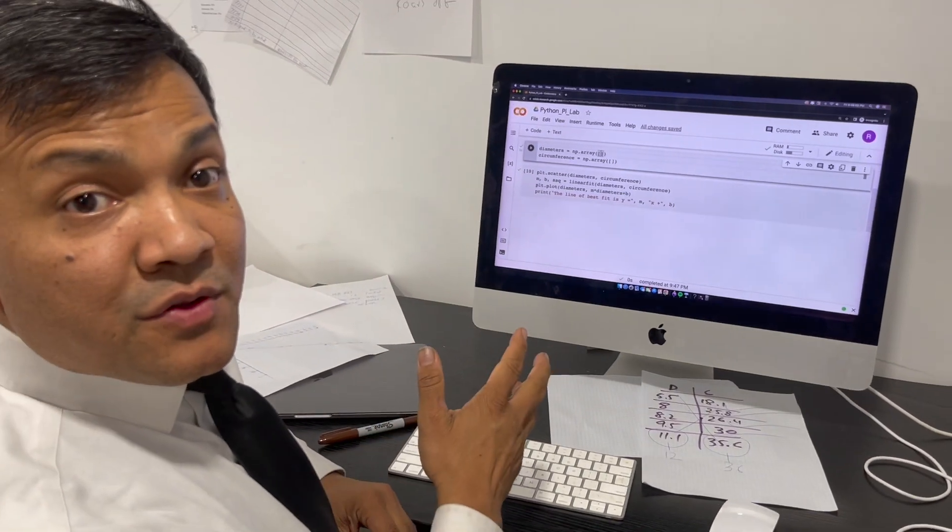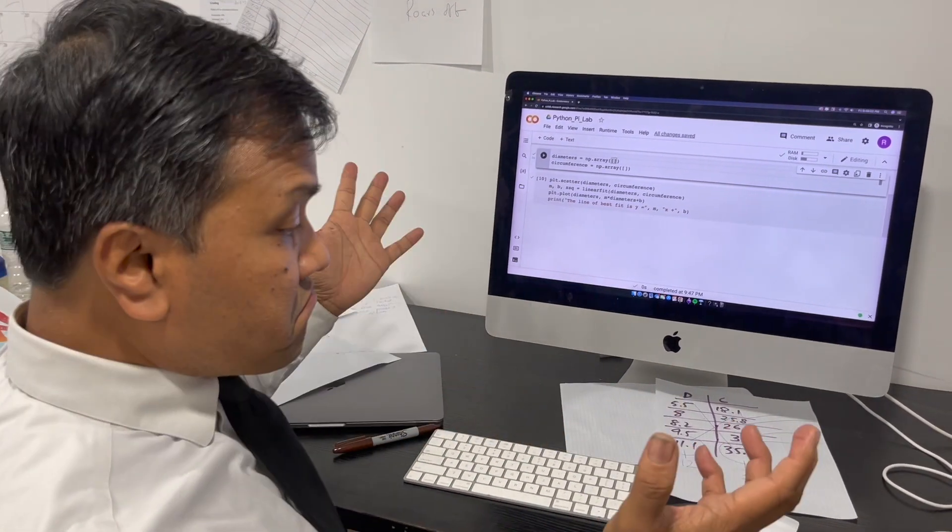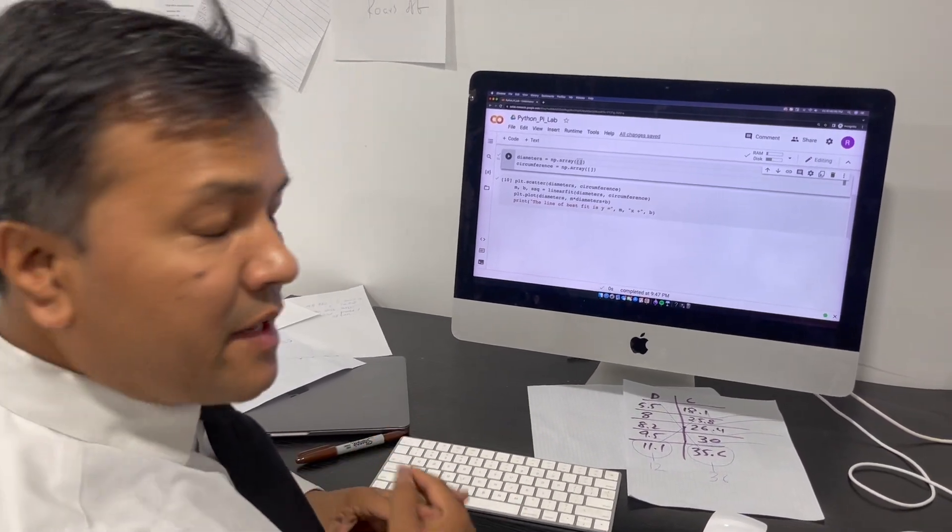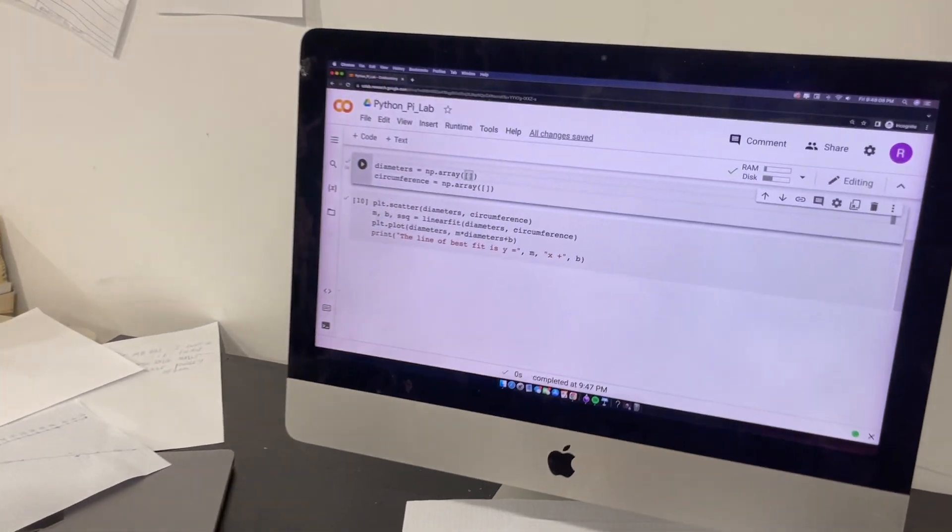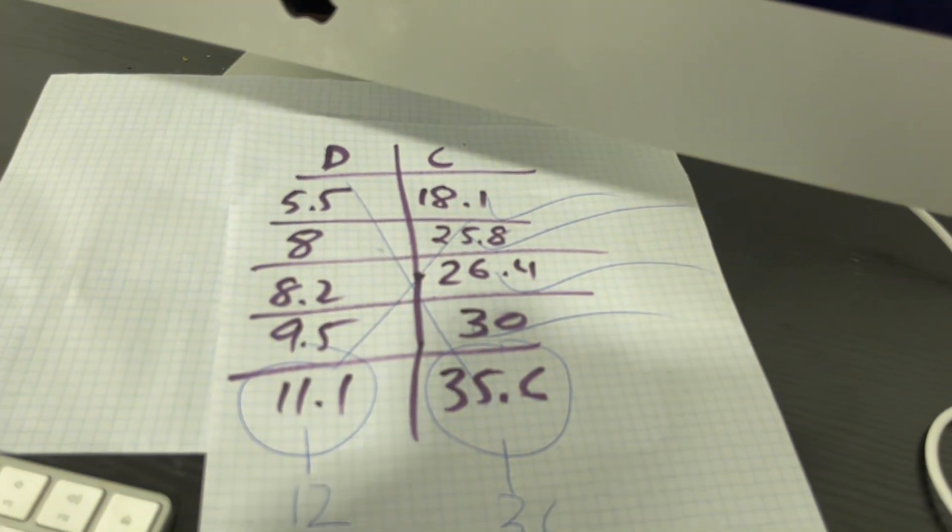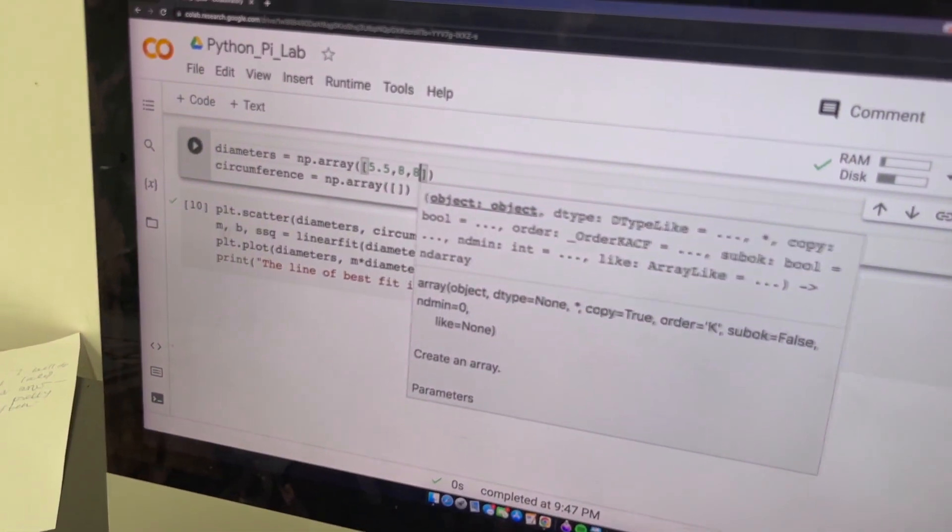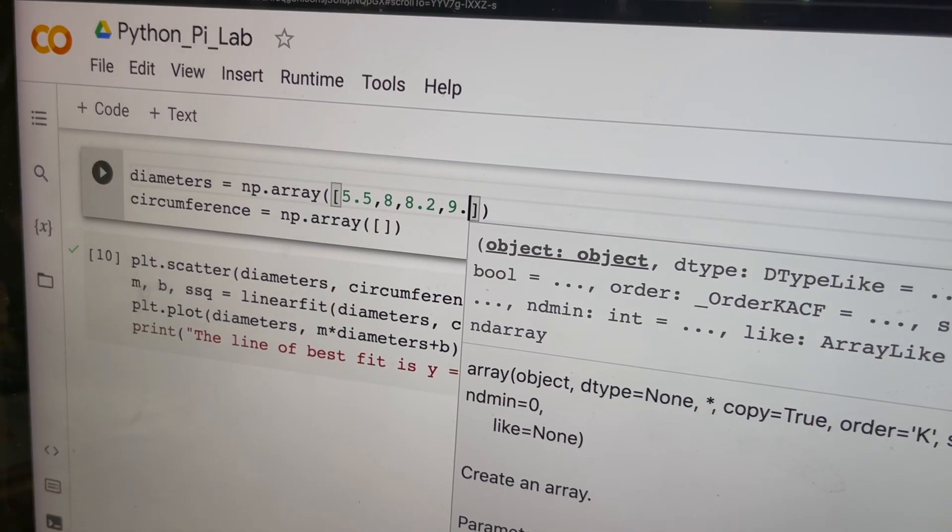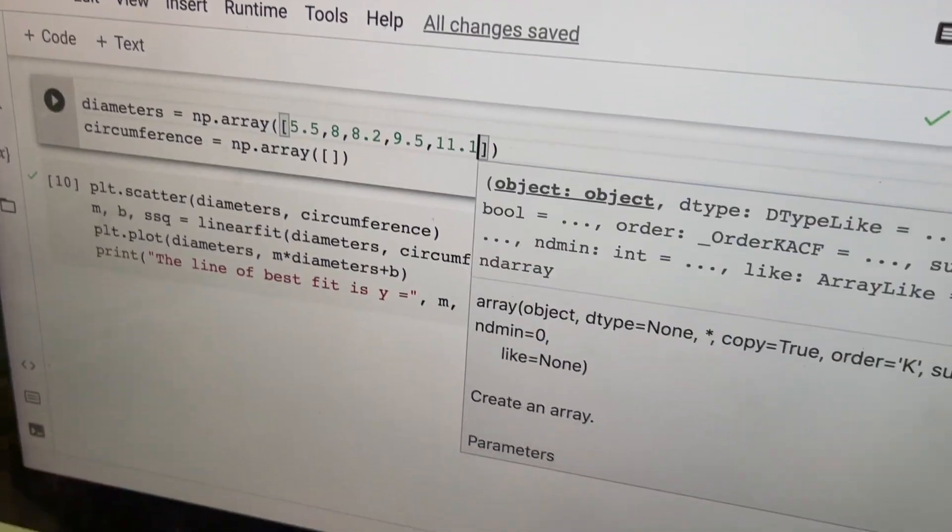So now we're going to use the python to verify how good or bad our slope came from the best-fit line. So these are our points 5.5. So 5.5, 8, 8.2. These are the x-axis. 9.5. These are the diameters. 11.1.